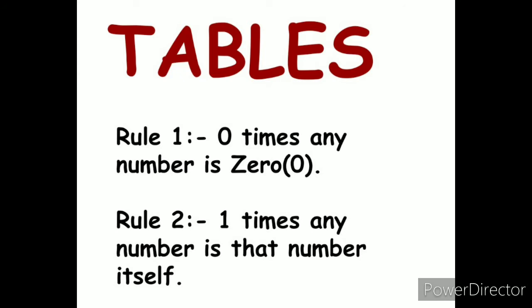The second rule is when we multiply any number with 1, the answer will always be the number itself. Like 3 ones are 3, 6 ones are 6, 8 ones are 8, 10 ones are 10, 12 ones are 12. Any number we are multiplying with the 1, the answer will be the number itself. So now let us get started with the table of 2.